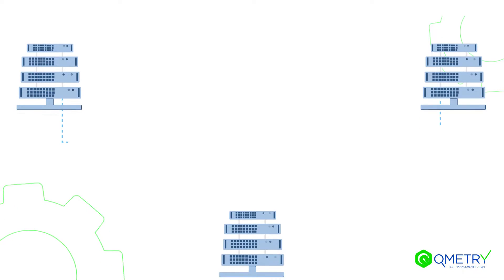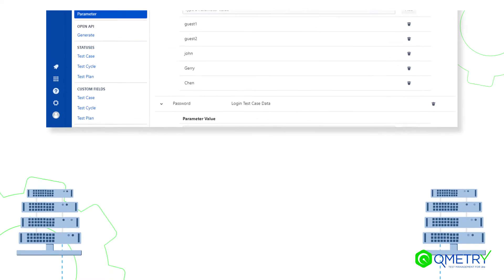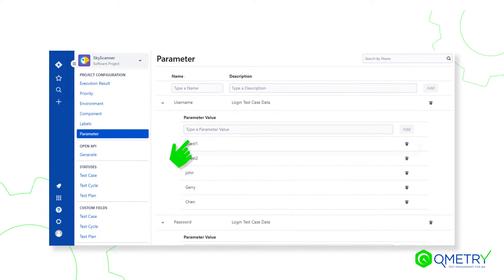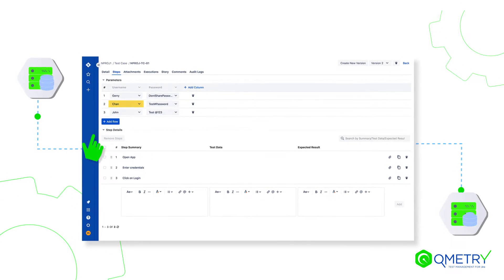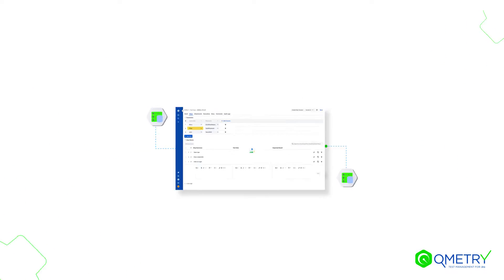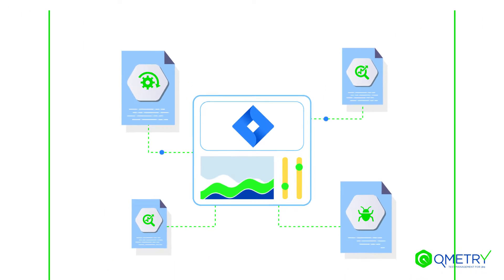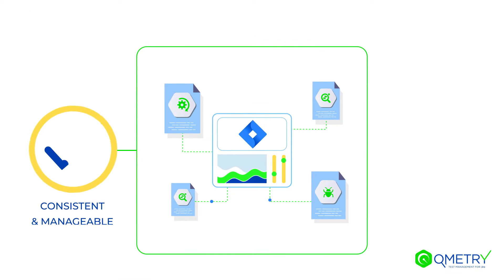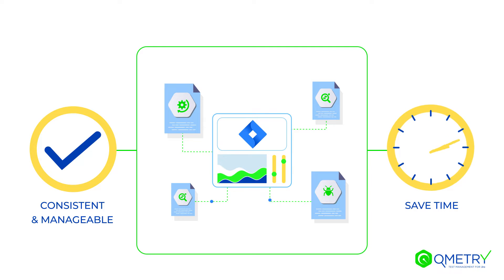Save time with Qumitri's data parameterization. It allows QA teams to store reusable data in one central location, import existing parameters and datasets, and share this data across Qumitri projects in Jira to make tests consistent, manageable and save time.